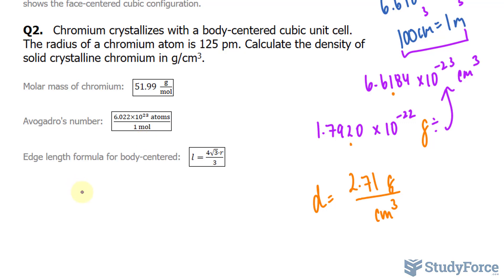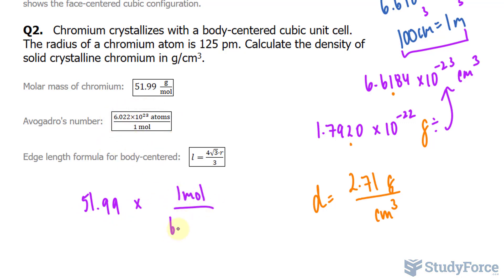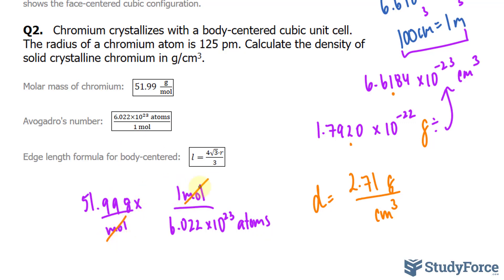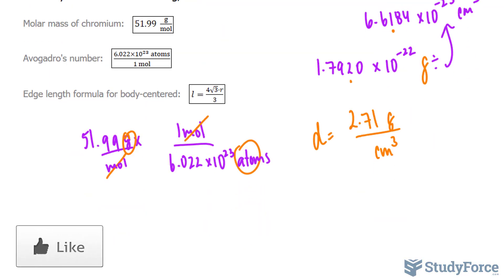We take 51.99 grams per mole and multiply it by 1 mole over 6.022×10²³ atoms. The mole units cancel out, leaving us with grams per atom. So we now have the mass per single chromium atom.